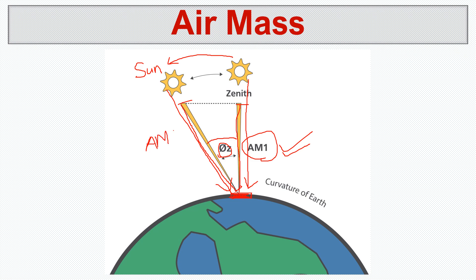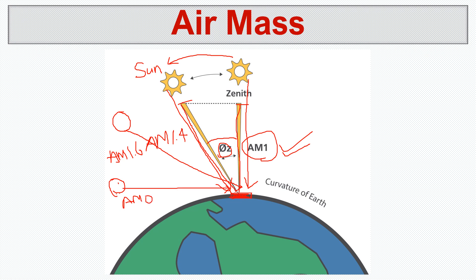When the path is longer, air mass is more than one — maybe 1.3 or 1.4. As the sun moves further, air mass increases to maybe 1.6. If the sun reaches the horizon — at the same level as the panel — air mass actually becomes zero because we get no radiation onto the panels; solar radiation is coming to the side, not onto the panel surface. So air mass zero means no usable radiation.